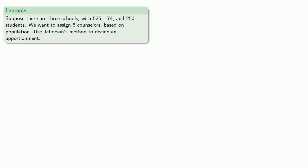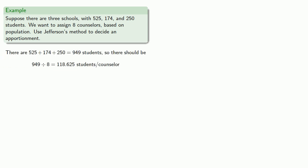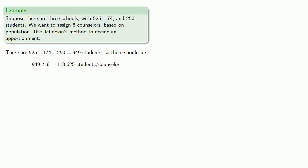We find that there are 949 students, so there should be 118.625 students per counselor. Using that as a divisor won't allow us to allocate all of the counselors, so we'll use Jefferson's method and choose a different divisor. After a little bit of work, we find a divisor of 105, which gives assignments of 5, 1, 2.